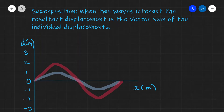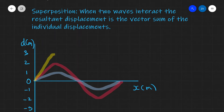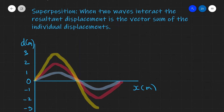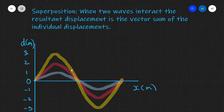So we can draw the resultant wave. All we need to do is start at zero, then carefully go up to three, then hit zero at the same point, then go down to minus three, and then back up to zero. Notice that at any point, the displacement of the resultant wave is the sum of the individual displacements.